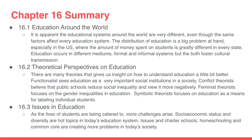Now we will summarize all of Chapter 16. Section 16.1 was about education around the world. It is apparent that educational systems around the world are very different, even though the same factors affect every education system. The distribution of education is a bigger problem at hand, especially in the U.S., where the amount of money spent on students is greatly different in every state. Education occurs in different mediums — formal and informal systems — but both foster cultural transmission.